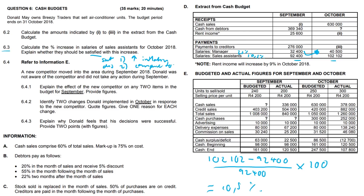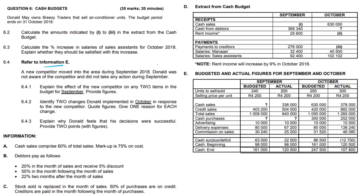Refer to information E: a new competitor moved into the area during September 2018, and Donald was not aware and took no action. Question 6.4.1: explain the effect of the new competitor on any two budget items. Total sales decreased from 1,008,000 to 840,000 — 40 fewer units were sold. Delivery expenses also decreased because there were fewer sales.